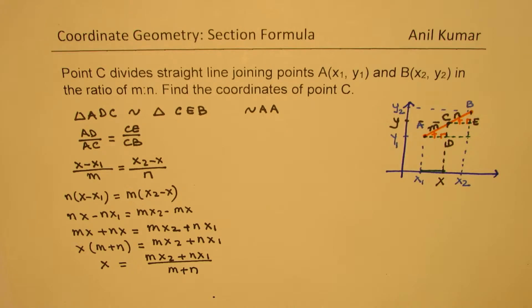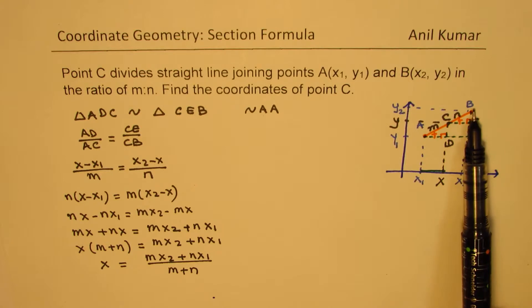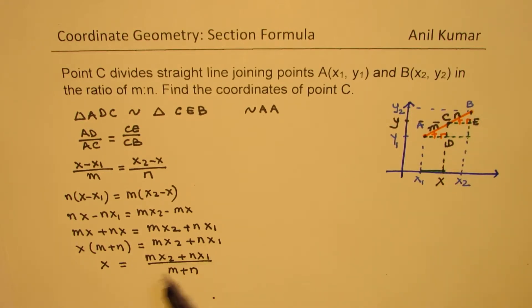So the value of x which we get is basically this ratio times the x value of the other point, far end, plus nx1. So we get the value of x.